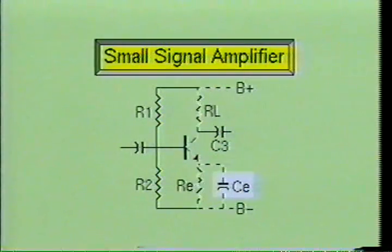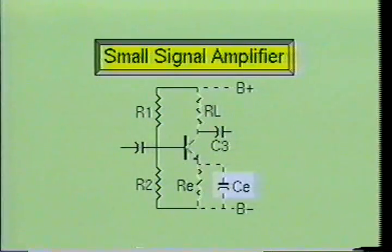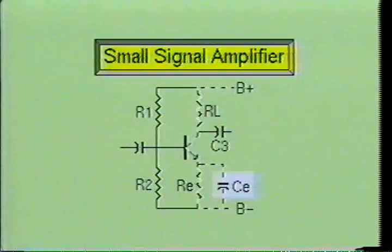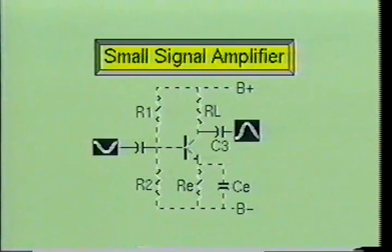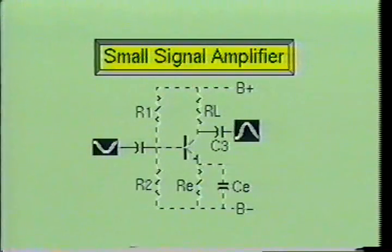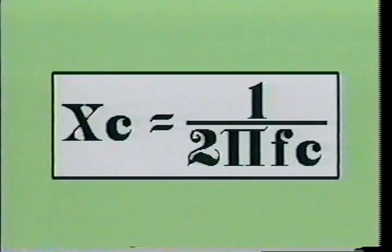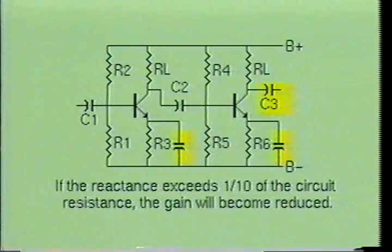Therefore, in small signal amplifiers, the emitter resistor RE will be bypassed with a large capacitor CE. Capacitor CE provides a low impedance path for any AC signal current, eliminating any reduction in gain caused by the emitter resistor. The ideal small signal amplifier should amplify all frequencies equally within the linear portion of the characteristic curve. But due to the biasing and coupling circuitry, this ideal situation cannot exist. The reactance of a capacitor depends upon the frequency being applied to it, and increases as the frequency decreases. Therefore, at low frequencies, the coupling capacitor may attenuate the incoming signal. If the reactance of the capacitor exceeds about one-tenth of the circuit's input resistance, the gain of the circuit will be reduced. The emitter bypass capacitor and output coupling capacitor will also affect gain at low frequencies.